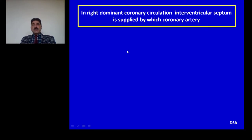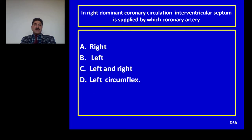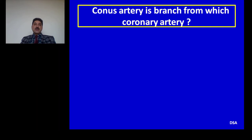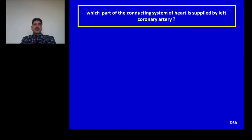Question 5: In right dominant coronary circulation, the interventricular septum is supplied by which coronary artery? Options: right, left, left and right, left circumflex. Answer: In case of right dominance, the posterior one-third of the septum is supplied by the right coronary artery, while the anterior two-thirds is supplied by the left anterior descending coronary artery — so it is supplied by both right and left. Question 6: Conus artery is a branch from which coronary artery? Options: right, left, both, left circumflex. Answer: The infundibulum or conus is supplied by both right and left coronary arteries.